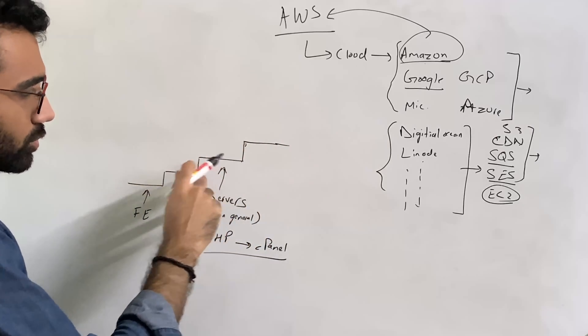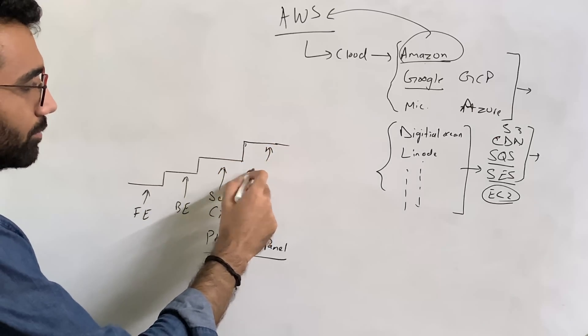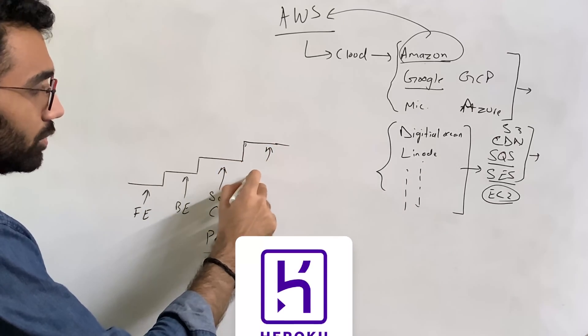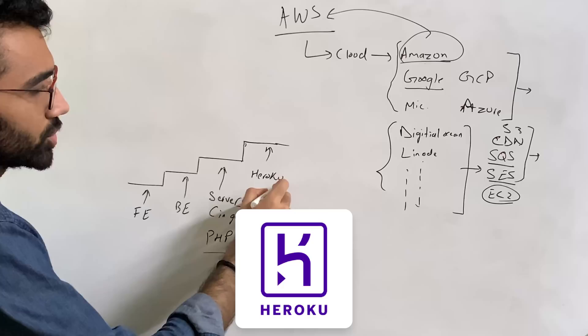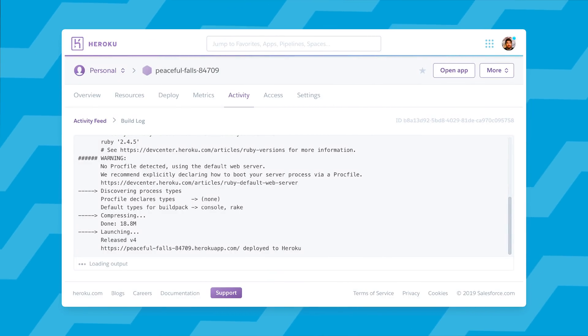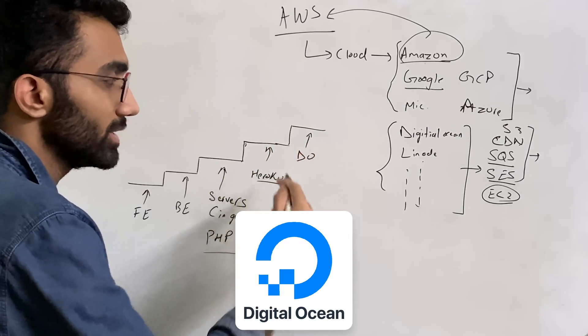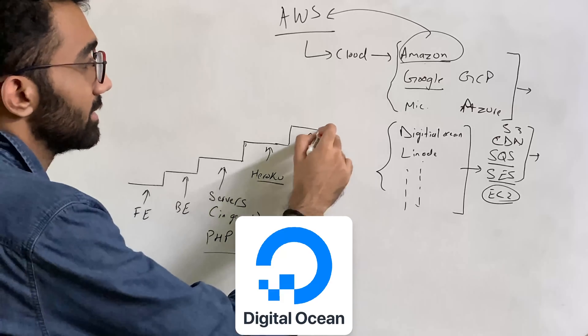I knew about AWS at this point also but I did not really have the courage to attempt to do something with that but I knew about services like Heroku for example which are like cloud services like AWS but they have kind of simpler interfaces. Then I came to know about something like DigitalOcean which I worked with extensively over the time